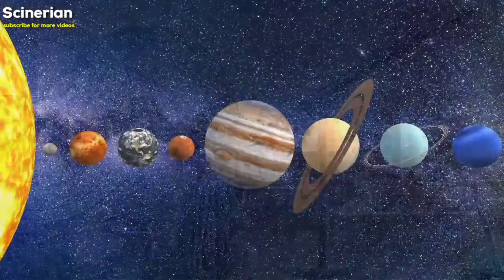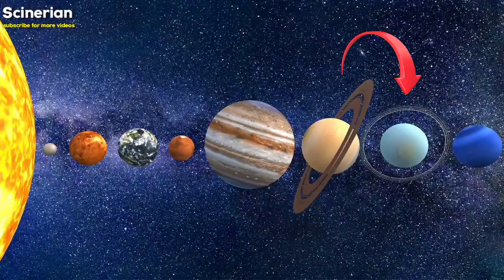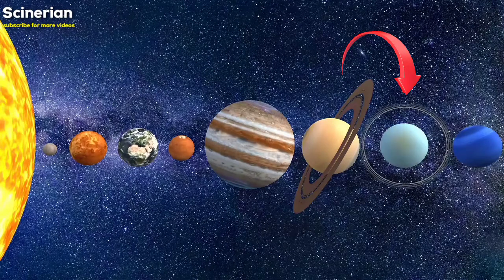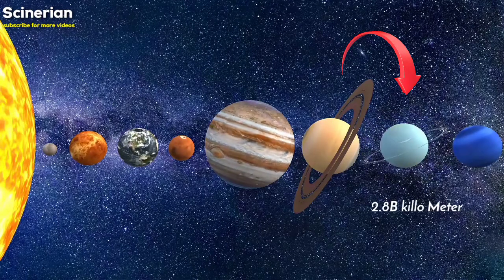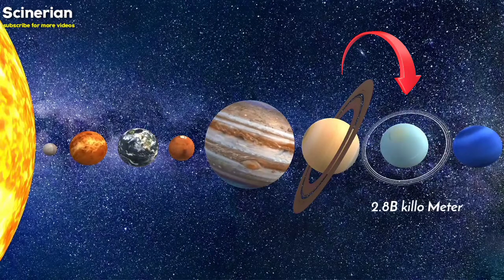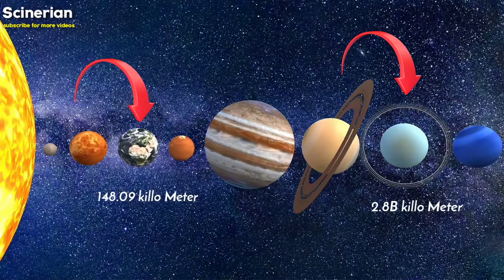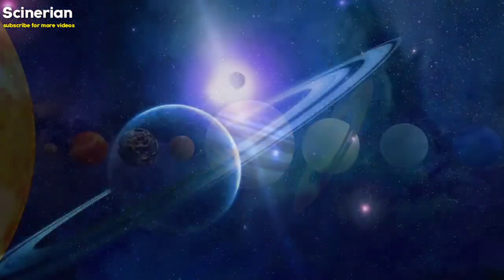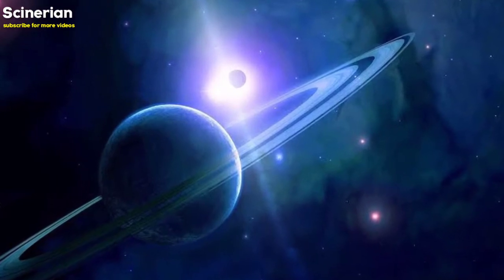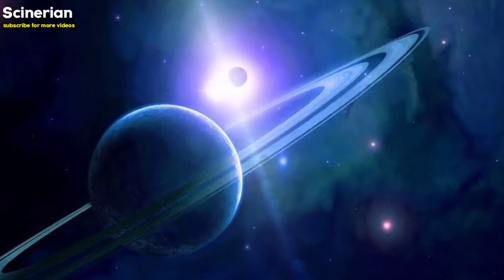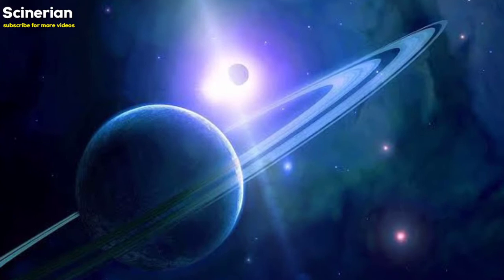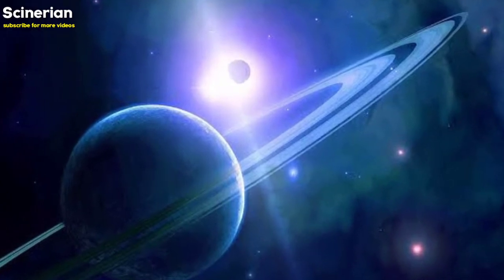The average distance between Uranus and the sun is approximately 2.8 billion kilometers. Uranus is 1.7 billion kilometers from Earth, and the distance between sun and Earth is 148.09 million kilometers. Uranus revolves around the sun in an eccentric orbit of 0.046, thus the distance between them varies throughout the year.